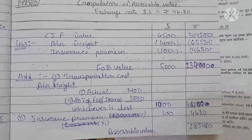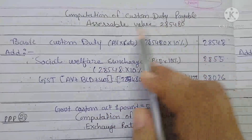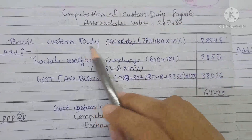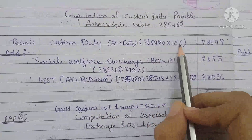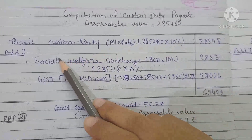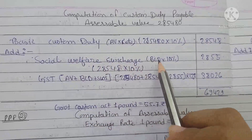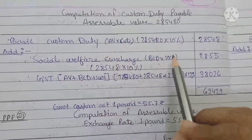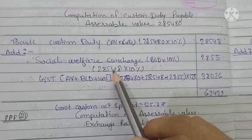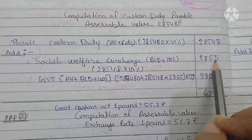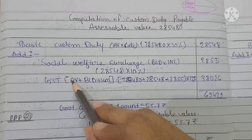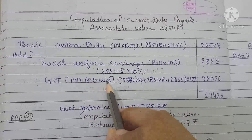So the assessable value comes to ₹2,85,480. We calculate basic customs duty at 10% of ₹2,85,480 = ₹28,548. Then we add social welfare surcharge at 10% of basic customs duty, so 10% of ₹28,548 = ₹2,855.